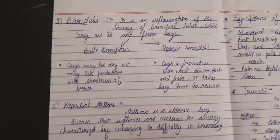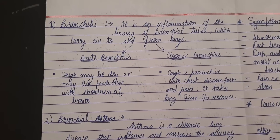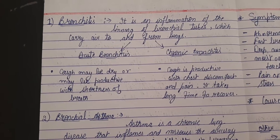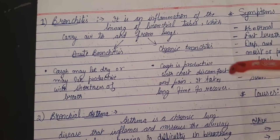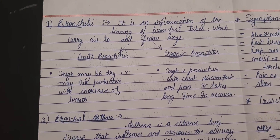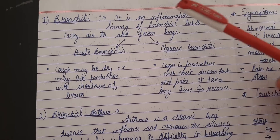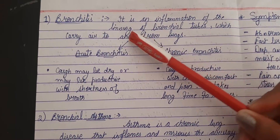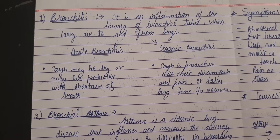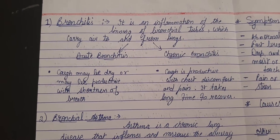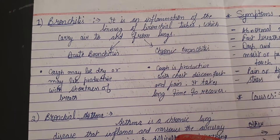First we are going to discuss about bronchitis. In all types of respiratory diseases and emergencies, there is inflammation, mucus formation, and narrowing of the tubules. Bronchitis is an inflammation of the lining of the bronchial tubes — the tubes which carry air from the trachea to the lungs.